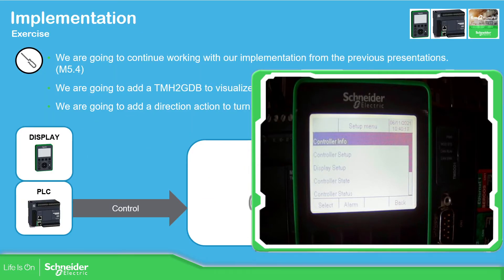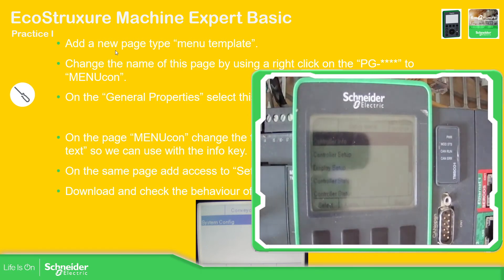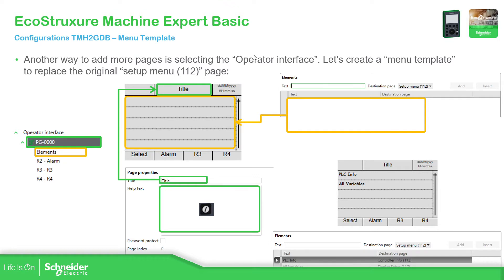What we're going to do is work with the old application that we have for the conveyor belt, and we're going to add a display in order to visualize some data. We're also going to add a direction action to turn the motor. In the elements we can add the text and then the setup menu, or we can select from the list of default or our operator interface pages in order to make the navigation.